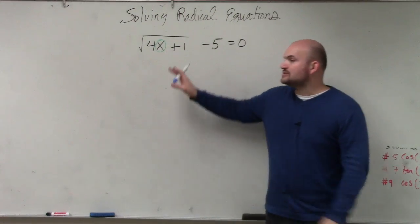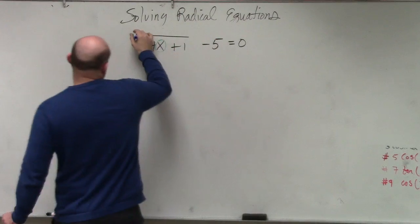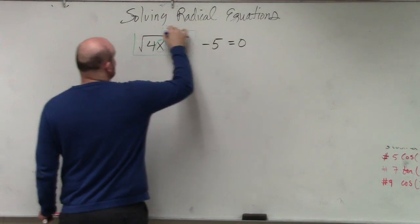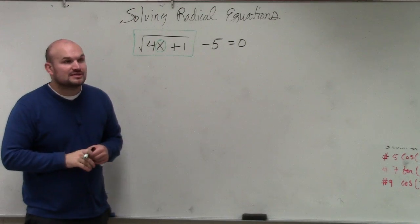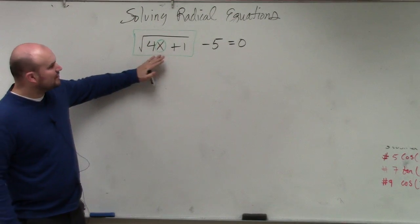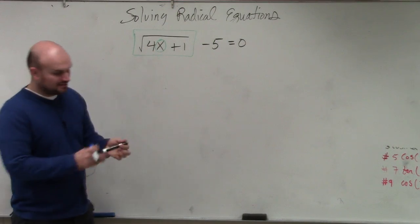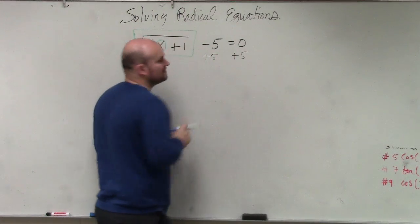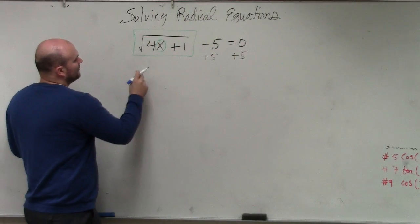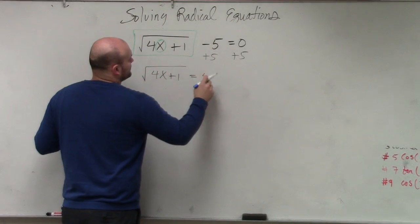So if you guys remember, when we were solving absolute value equations, one of the things I told you was to isolate the absolute value sign first. We're going to do the exact same thing with radicals. First thing you want to do when you're solving a radical equation is isolate the radical. So June Hall was right. First thing you're going to do is add a 5 to both sides. Therefore, I have the square root of 4x plus 1 equals 5.